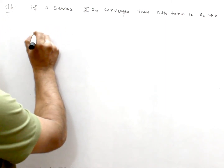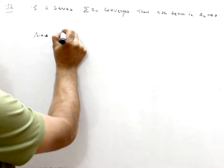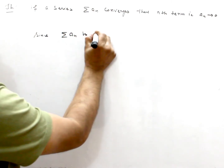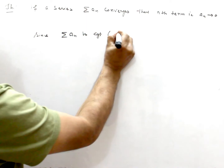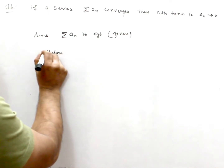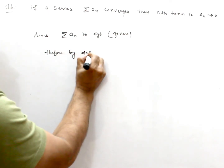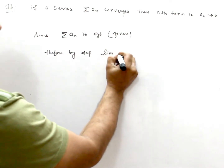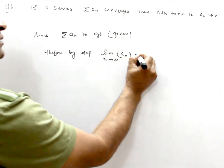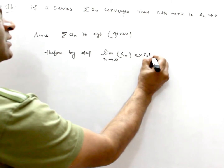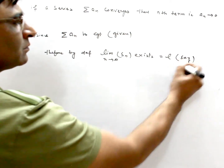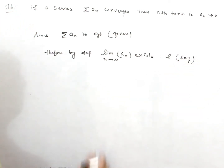Since AN is convergent — this is given — therefore, by definition, the limit of partial sums SN exists, say equal to L.